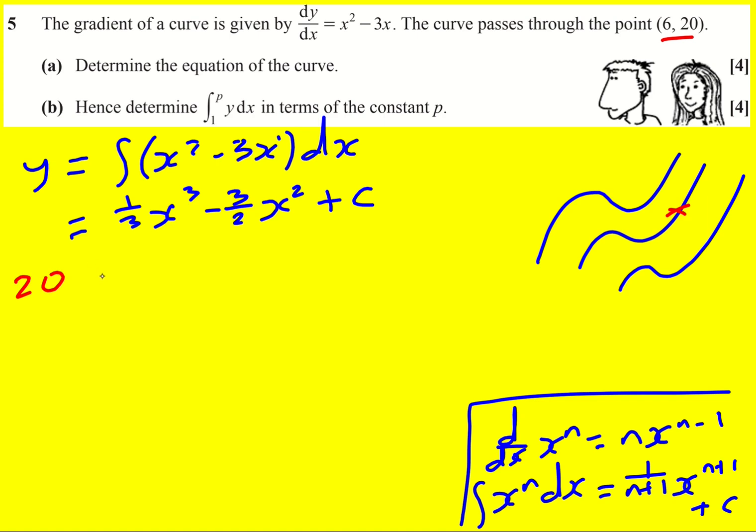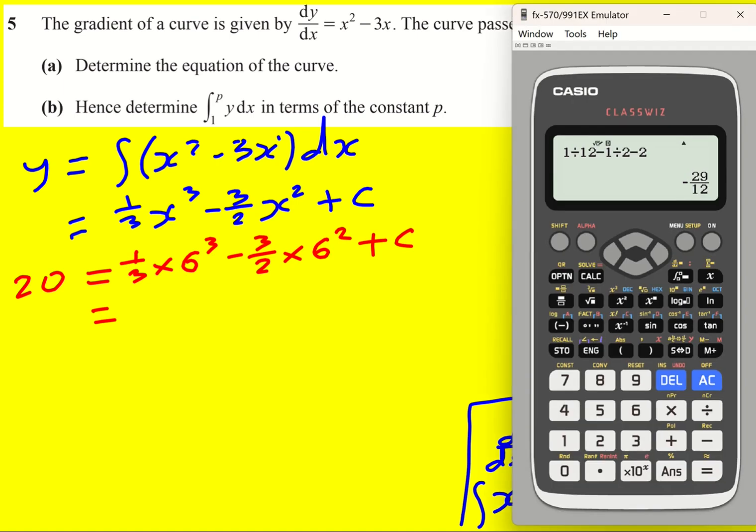So to finish this question off, I just need to substitute in. 20 is going to equal one third times 6 cubed minus 3 over 2 times 6 squared plus c. I think I can do all of that right hand side in one go. So 1 divided by 3 times 6 cubed minus 3 divided by 2 times 6 squared.